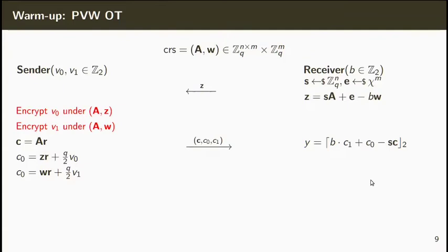That is, it will sample a vector R with a low norm and compute A times R and the value C0, which is Z times R plus an encoding of V0, and C1, which is W times R plus an encoding of V1. The receiver can now compute the value B times C1 plus C0 minus S times C and run the result modulo 2. It's easy to see that the value obtained by the receiver will be equal to B times V1 plus V0.